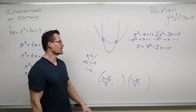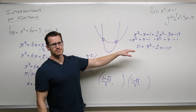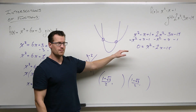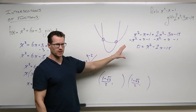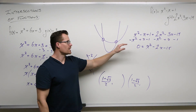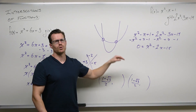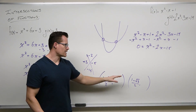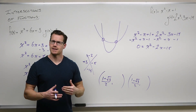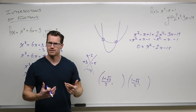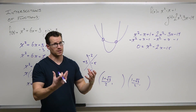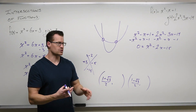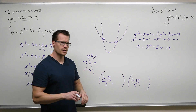So again: factor it. If it's not factorable, make sure you've really tried to factor it. If it's still not factorable, do the quadratic formula. You're going to end with some nasty x values of your points of intersection — plug them in anyway. Don't use approximations; you have to use exact values.